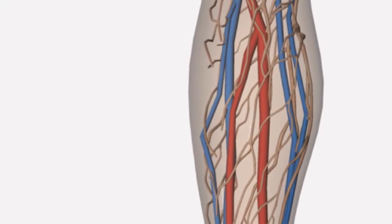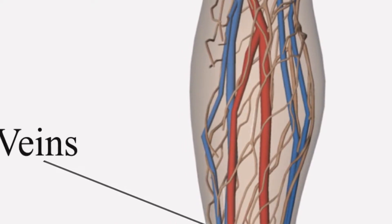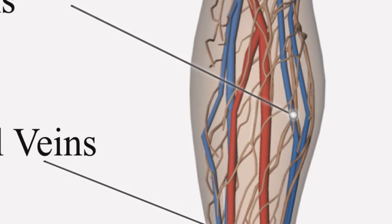There are a number of different veins in your legs. Superficial veins are smaller veins which lie below the surface of the skin. Deep veins are larger and pass through the deep tissues of the legs.